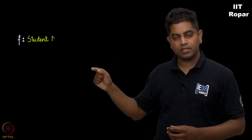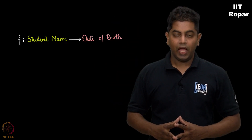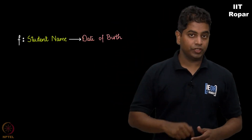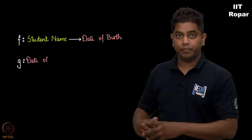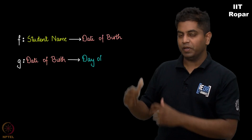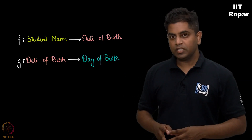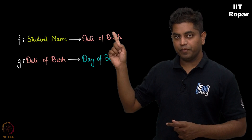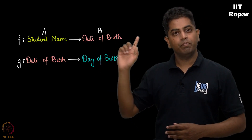Let's take an example where we have a function f mapped from student names to their date of birth, and another function g mapped from their date of birth to day of birth — Monday, Tuesday, Wednesday, whatever. Now, there is a function f from A to B and a function g from B to C.